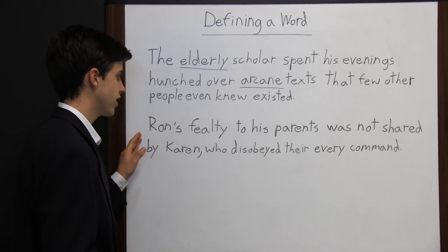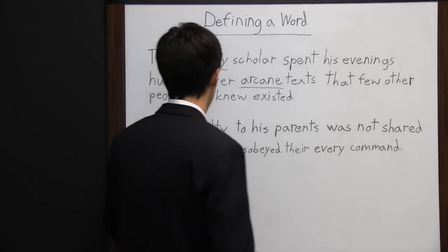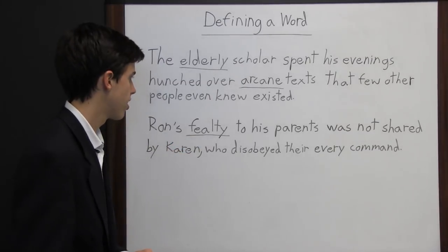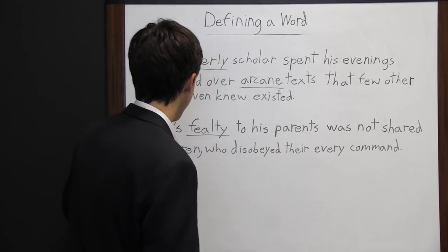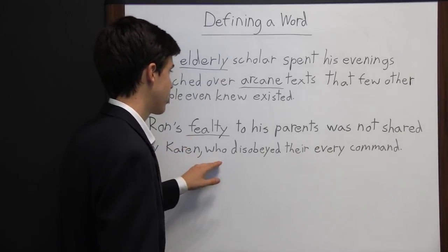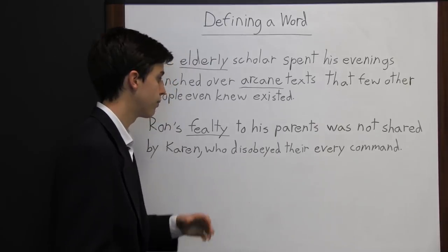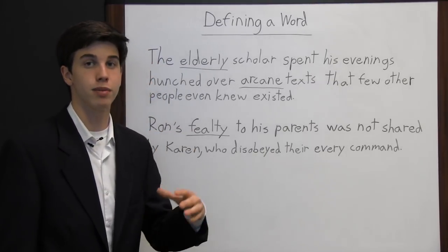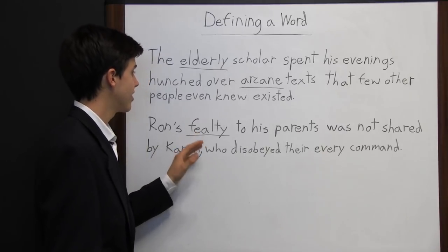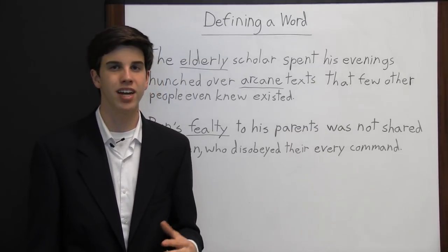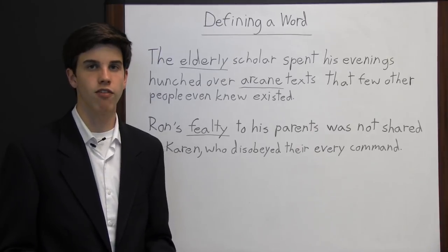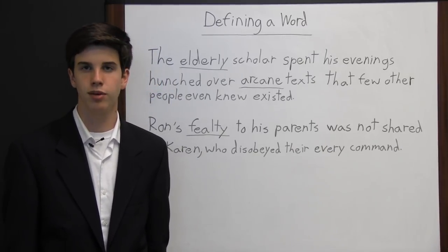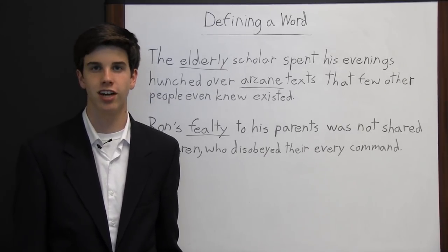The next sentence: 'Ron's fealty to his parents was not shared by Karen, who disobeyed their every command.' There aren't many words that tell us the definition of 'fealty' directly. Instead, we see words that tell us what fealty is not. Ron is being contrasted with Karen. If fealty is not disobeying their every command, then fealty must mean obeying or being faithful. By looking at context clues — in this case a contrast — a reader can quickly determine the definition. Although it may not be the exact definition, it will generally be the definition for that word in that sentence. This is helpful because it's much quicker than consulting a dictionary or thesaurus.